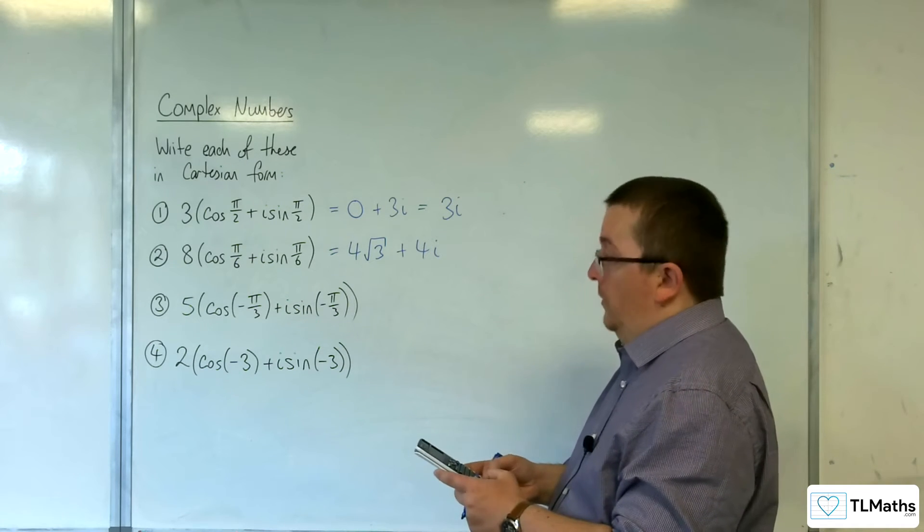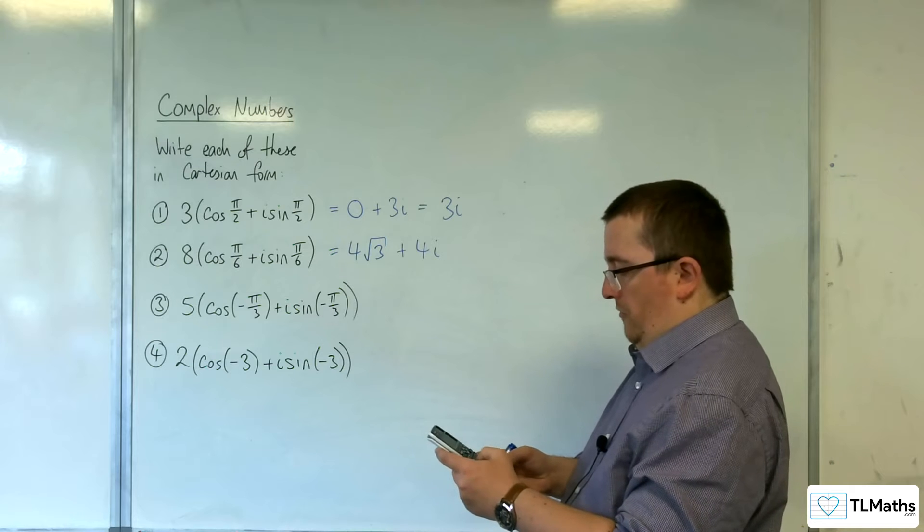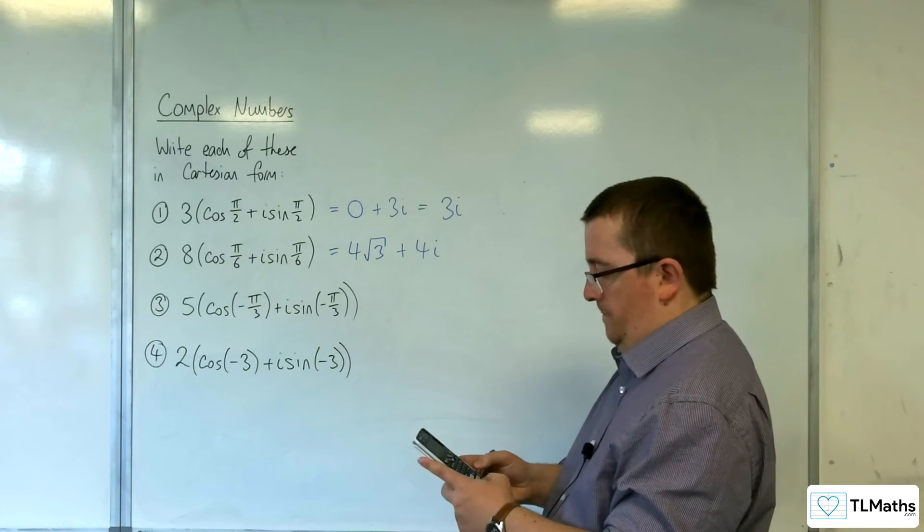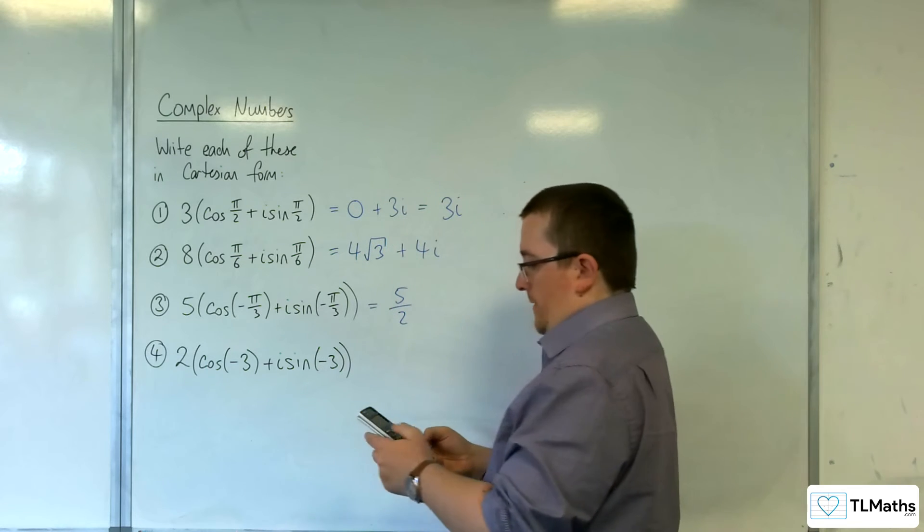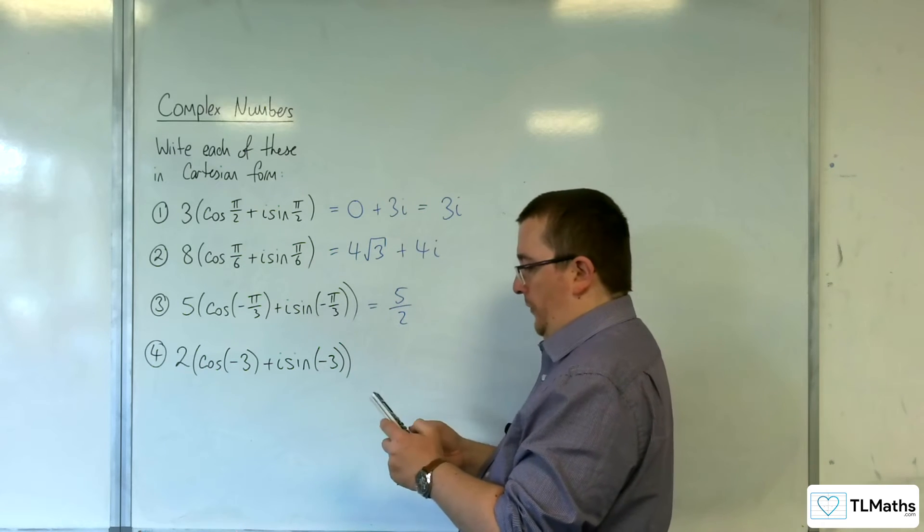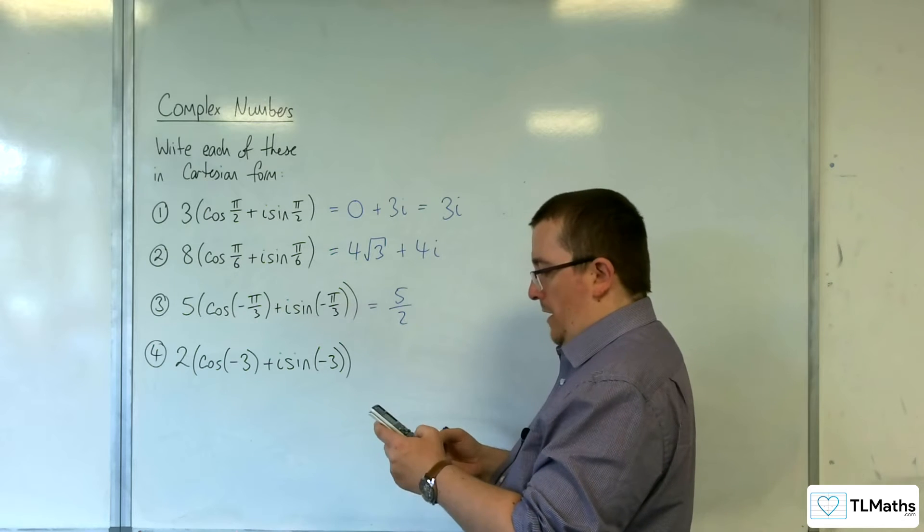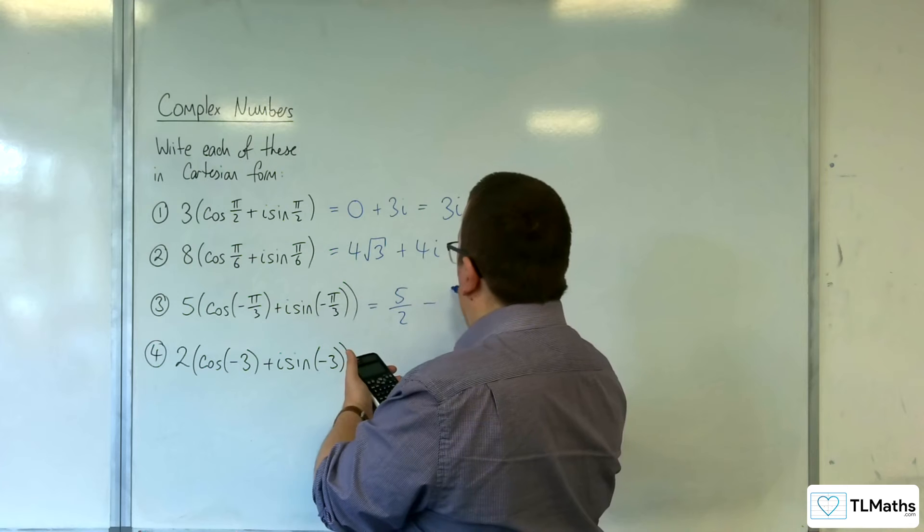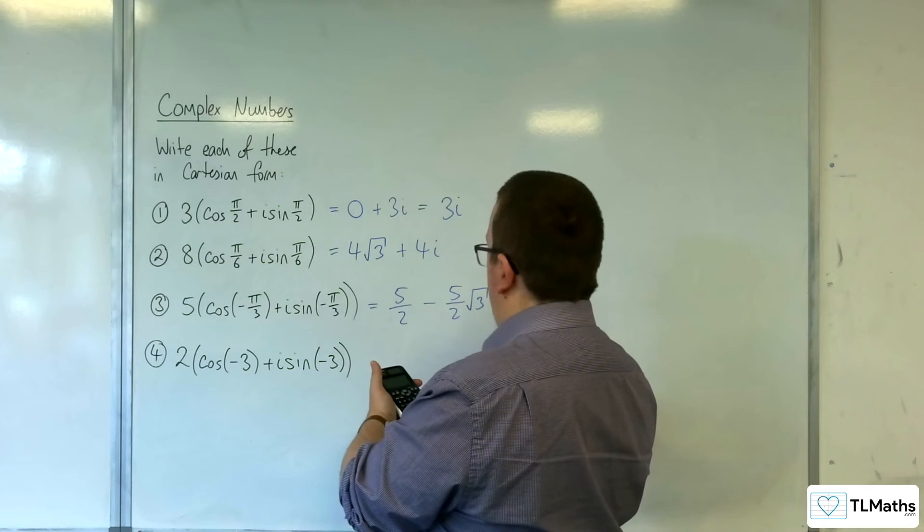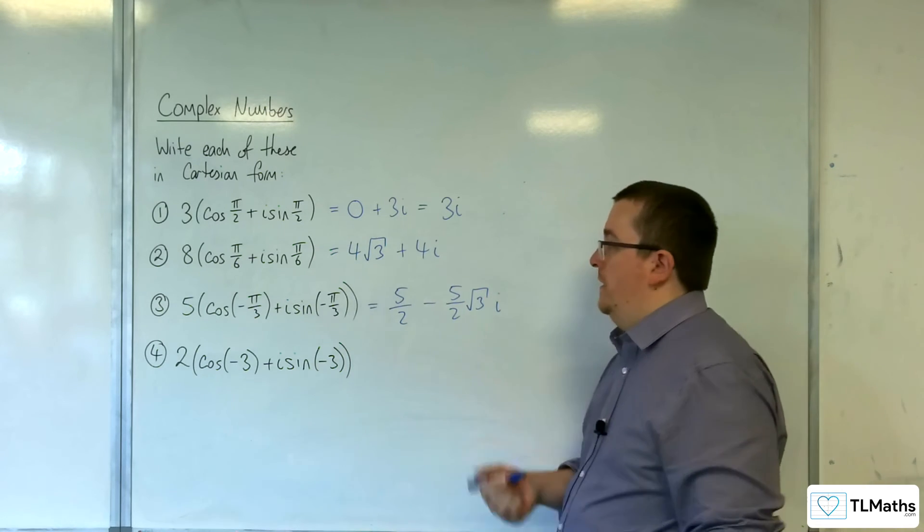Number 3, 5 times cosine of minus pi over 3 is 5 halves. And then we get 5 times sine of minus pi over 3, which is minus 5 halves root 3i. Don't forget the i.